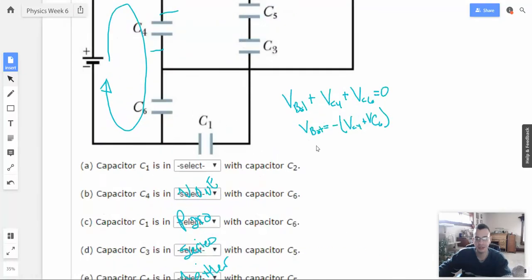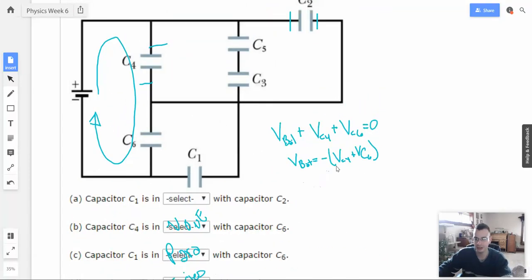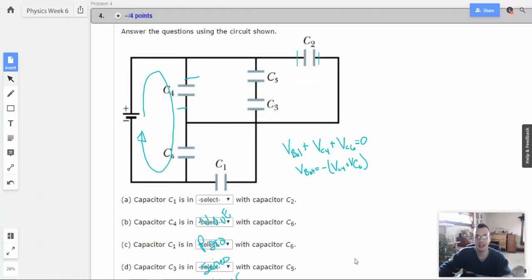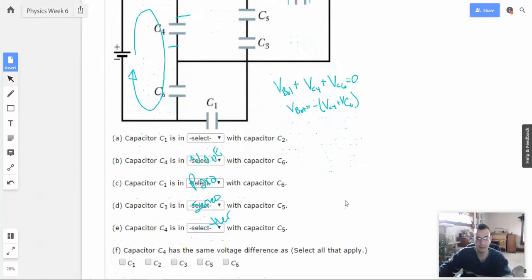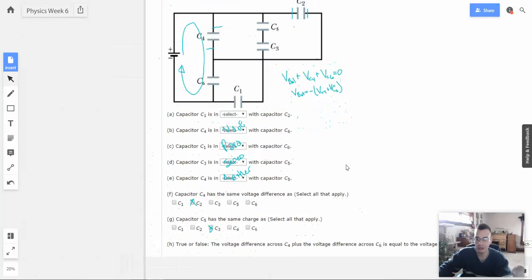That's an ambiguous question, and I would say true, but if for some reason they want you to say false, then that's the reason why, because it's actually negative, but the magnitudes will be the same. And that's how you should look at this problem.